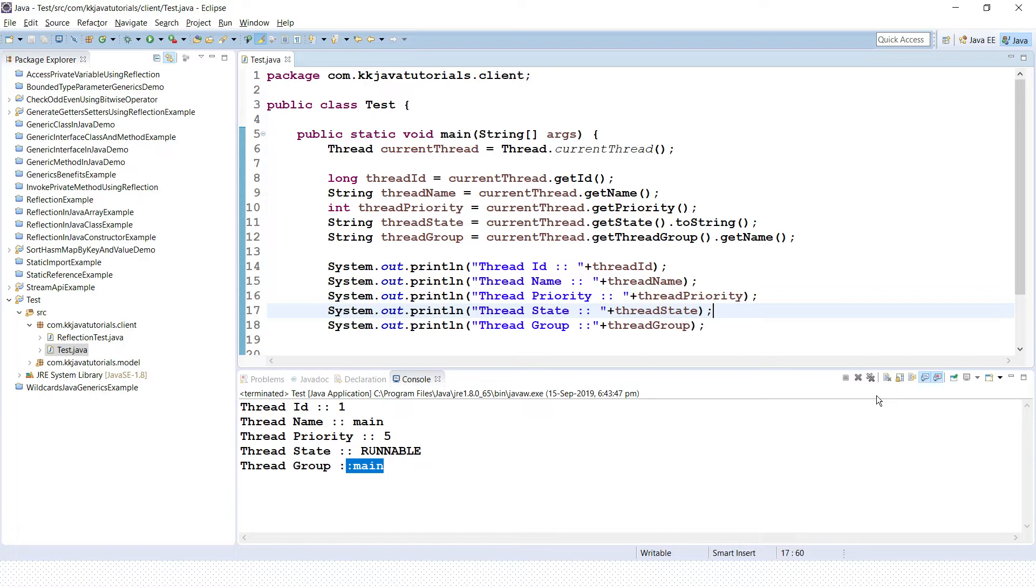How can we get the reference of the current thread? In the Thread class we have a method called currentThread. It's a static method so you can directly call Thread.currentThread and we get the reference of the current thread.